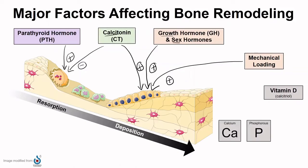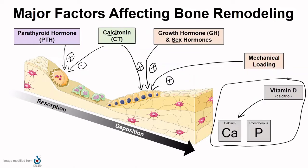The amount of calcium we absorb in our diets is dependent on the presence of vitamin D. Vitamin D, calcium, and phosphate all need to be present to allow for bone deposition to happen properly.